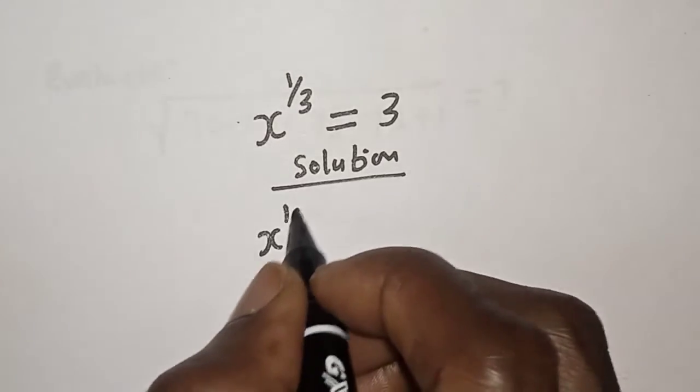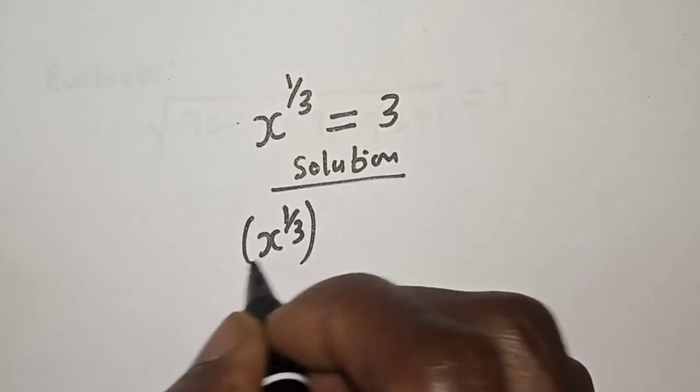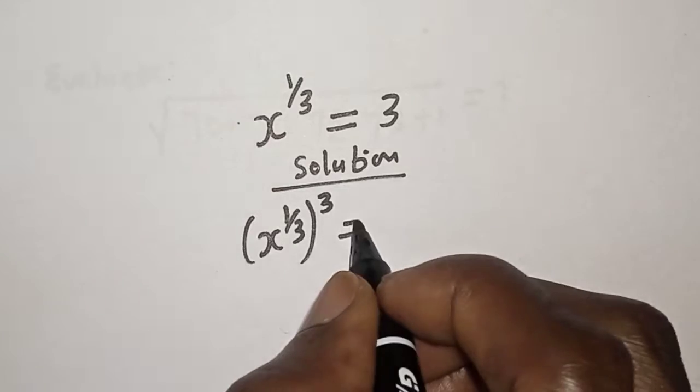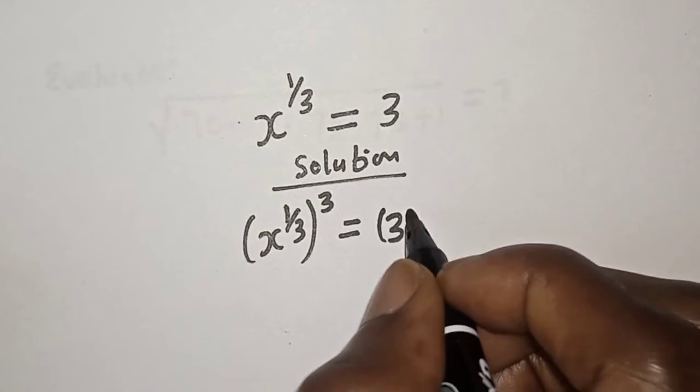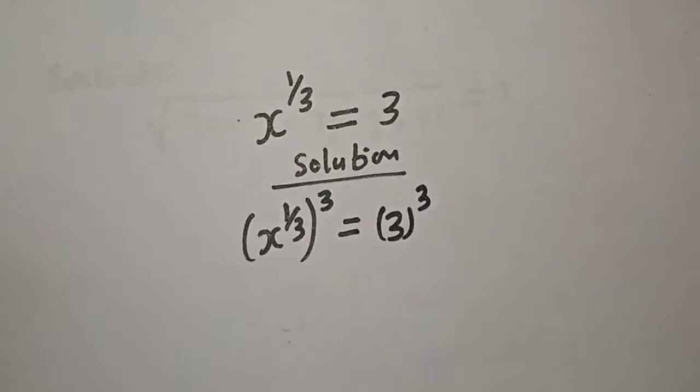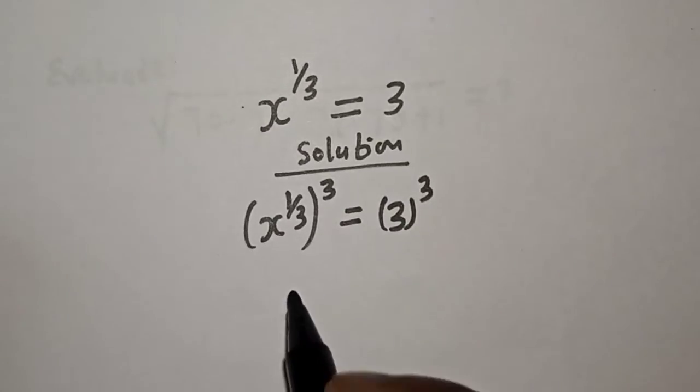x raised to power 1 over 3 to the power of 3 is equal to 3 raised to power 3. Because we are looking for the value of x.